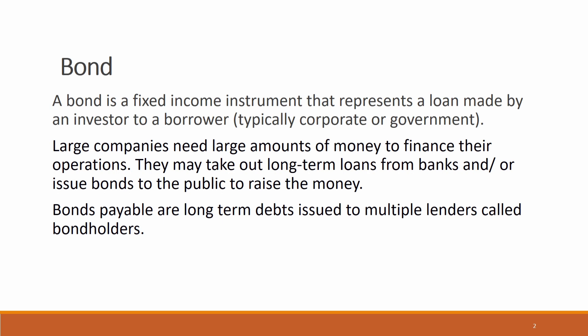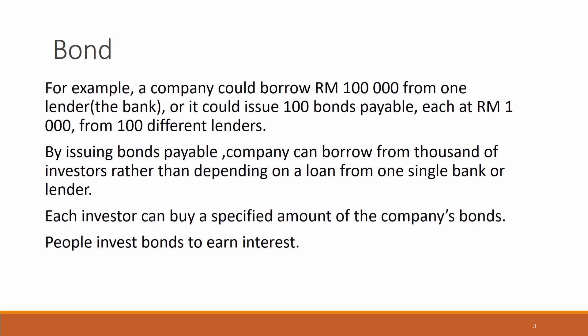Bond payable are long-term debts issued to multiple lenders called bondholders. For example, a company could borrow RM100,000 from one lender or from the bank, or it could issue 100 bonds payable each at RM1,000 from 100 different lenders. By issuing bonds payable, a company can borrow from thousands of investors rather than depending on a loan from one single bank or lender.